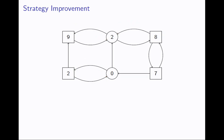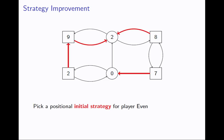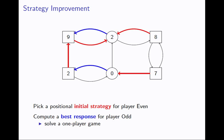The algorithm we're looking at is called strategy improvement. It can be applied to many different types of games, so I'll give an overview of what strategy improvement algorithms look like in general. You start by picking one of the two players to be the strategy improver — I'll pick player even — then pick an arbitrary initial strategy for the strategy improver. Once you've done that, for the opponent you find a best response strategy: given that player even is playing this red strategy, find the blue strategy that maximizes player odd's chance of winning.